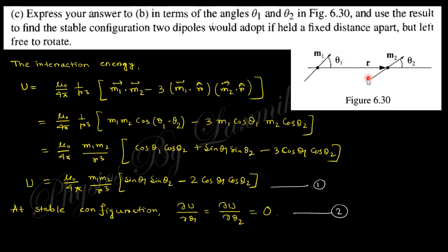Express the answer in terms of θ1 and θ2. If M1 makes angle θ1 and M2 makes angle θ2 with R, then the angle between M1 and M2 is (θ1 − θ2). Expanding using the formula cos(A−B) = cosA cosB + sinA sinB, we finally obtain this equation for the interaction energy in terms of θ1 and θ2.